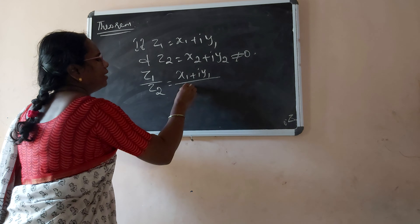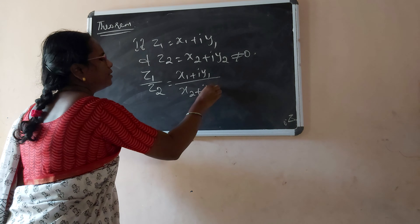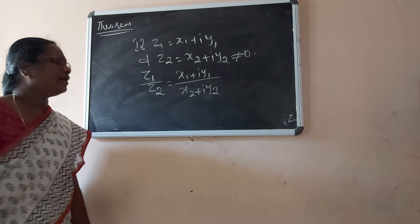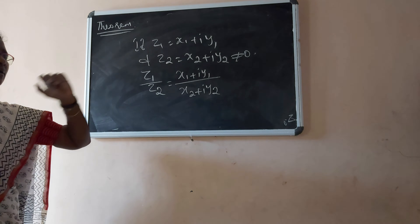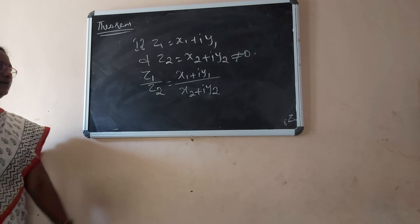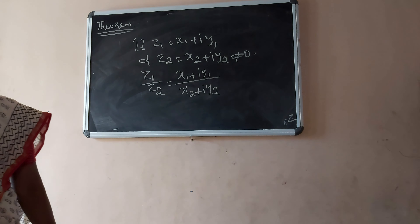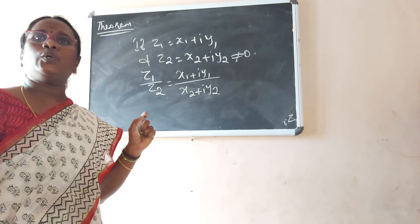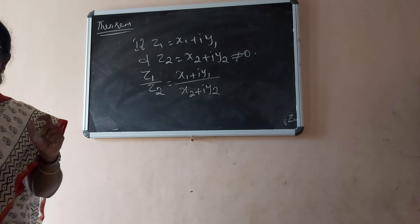Finally, it can be easily verified that the distributive laws are also satisfied. Therefore, the system (C, +, ·) is an Abelian field.